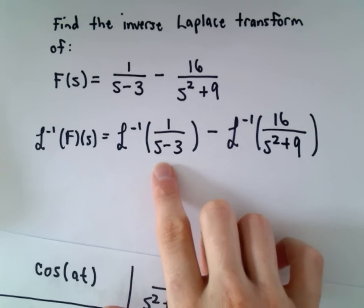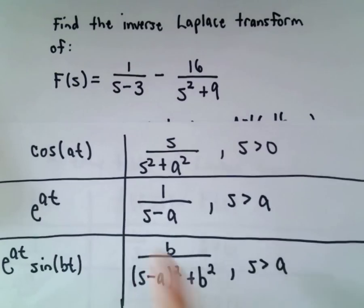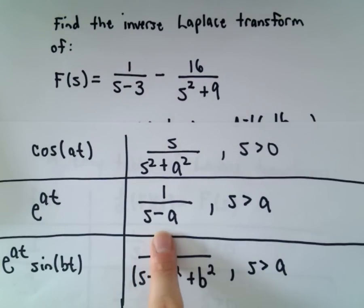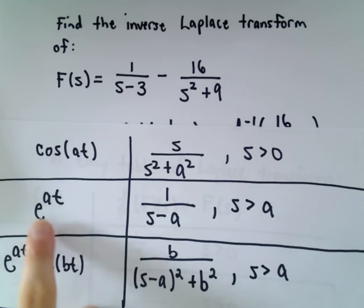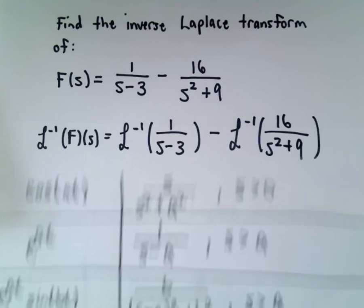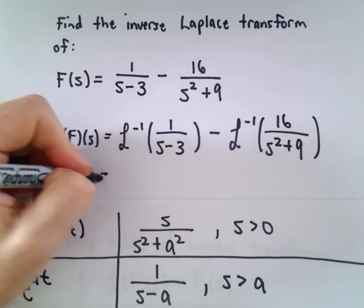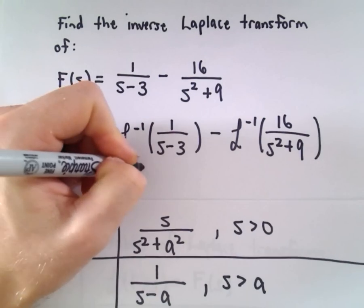If you look at this first expression 1 over s minus 3, that looks a lot like the exponential formula. Instead of the a value, we've got 3. So it says the inverse Laplace transform of 1 over s minus 3 is going to be e to the 3t.